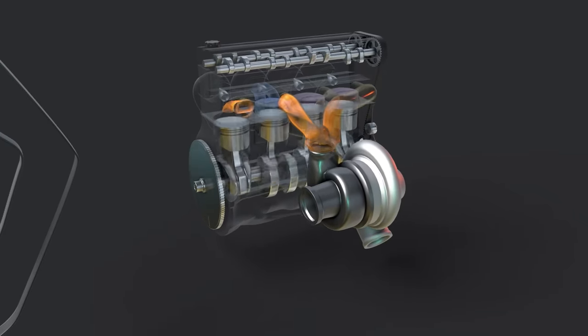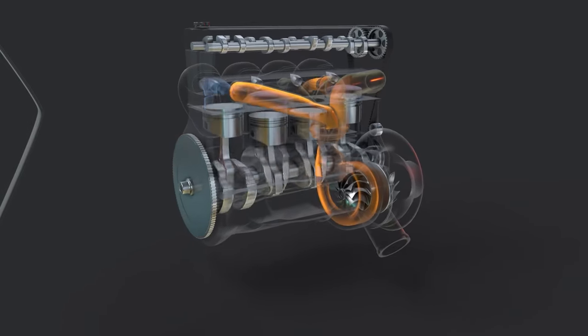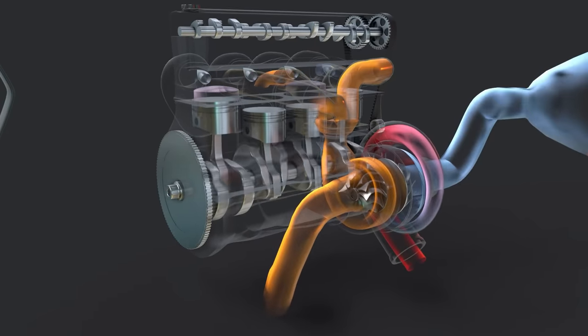Turbo setups produce an exponential power curve. Since they are powered by exhaust, turbos take time to build turbine speed and pressure before producing usable boost. This delay is called turbo lag.